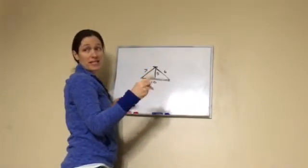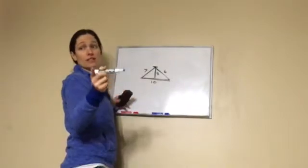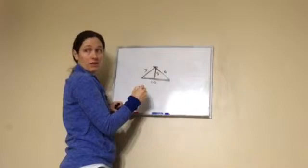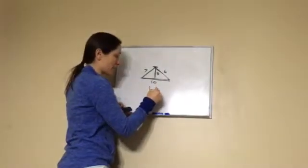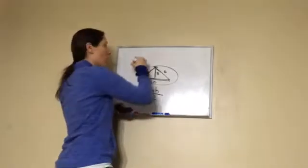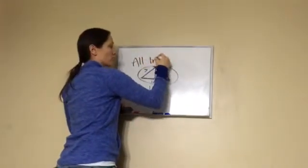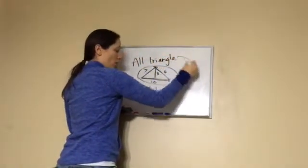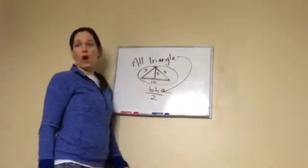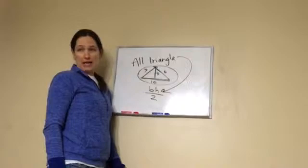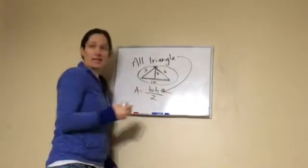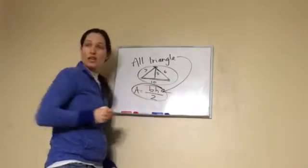You're gonna have to know that you do base times height, but it's not just base times height because that's length times width. What is it? It's half, base times height divided by two. All triangles, all triangles are base times height or length times width divided by two, all of them.